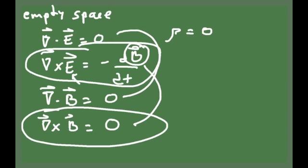Maxwell had, as many scientists did and still do, this idea of the beauty of nature, and that beauty is usually connected with symmetry. So he thought that such asymmetry between the electric field and the magnetic field was strange, and that got him to think about the possibility of adding an additional term to this equation so that the symmetry between the electric and the magnetic field would be restored.